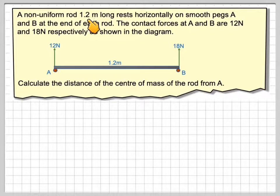A non-uniform rod, 1.2 metres long, rests horizontally on some pegs A and B at each end of the rod. The contact forces at A and B are 12 newtons and 18 newtons respectively, as shown in the diagram.